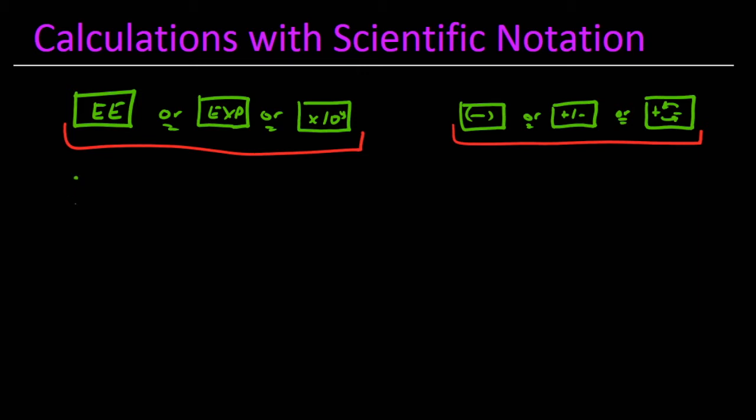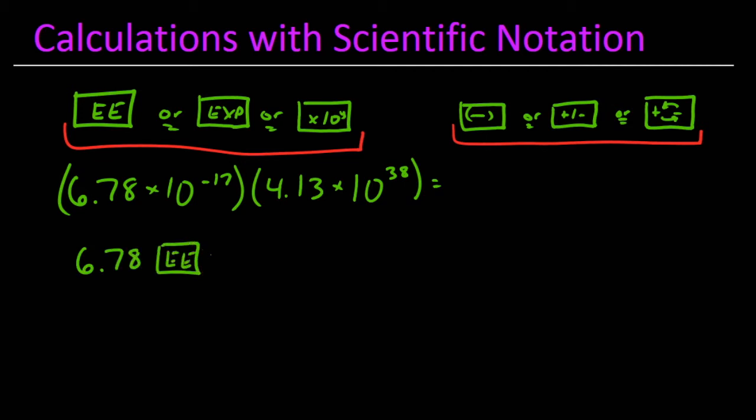In the first example we have 6.78 times 10 to the negative 17th times 4.13 times 10 to the 38th. In order to perform this calculation on your calculator, you need to find one of the buttons in each of the two groups above. For this example, I'm going to use EE in the first group and the negative sign in parentheses from the second group. If the buttons on your calculator are different, select a button from your calculator that's taken from the same group.